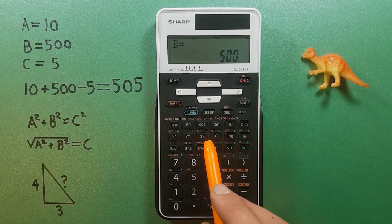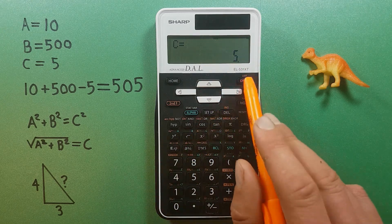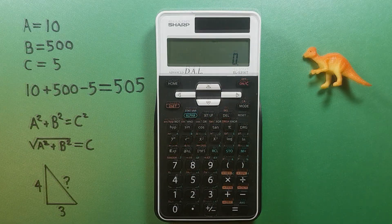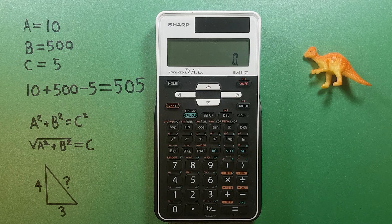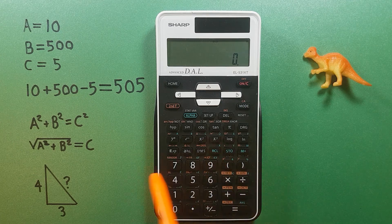Recall B: 500, yep. And recall C, which is 5. Looks good. Now if we want to recall these numbers and use them in a calculation, we can use the RCL key located here.